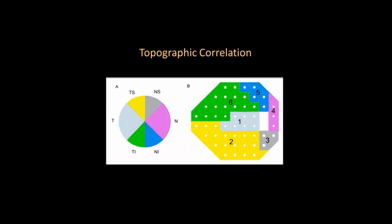The topographic correlation between the optic nerve and visual field is given by this picture. The various quadrants of the optic nerve — superotemporal, inferotemporal — correspond to specific areas of the visual field. So if you see a notch in the optic nerve or a nerve fiber layer defect in the inferotemporal region, you know to look for a superior arcuate defect in the visual field. Similarly, an abnormality in the superotemporal region would yield an inferotemporal visual field defect.